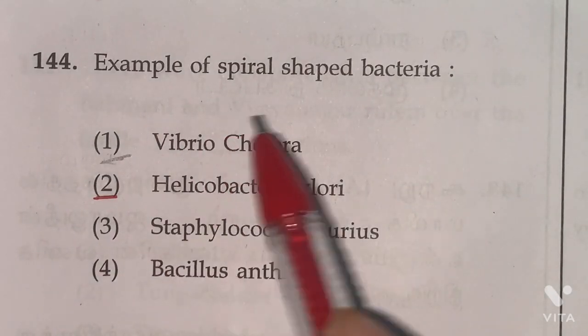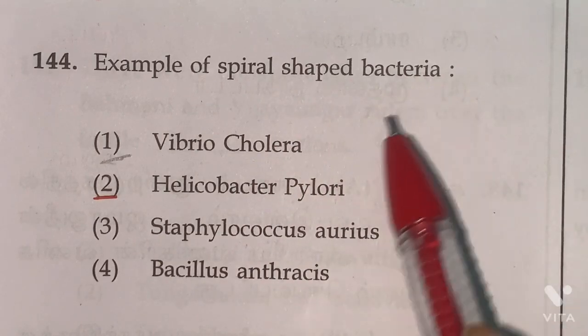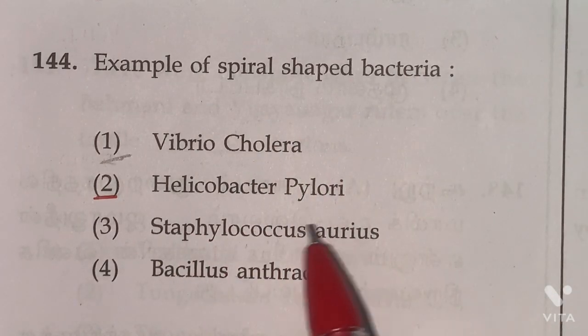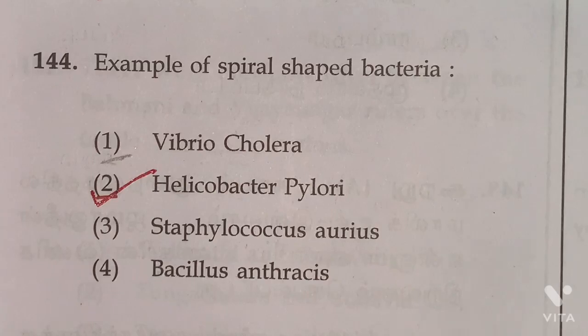144th. Example of spiral-shaped bacteria, Helicobacter pylori. So option 2 is the right answer.